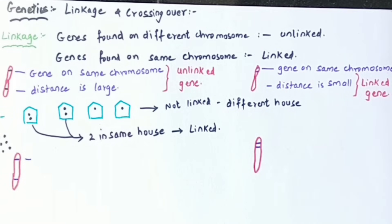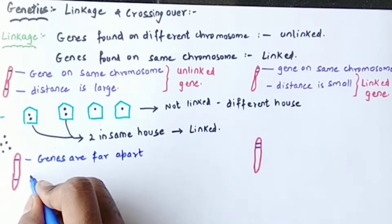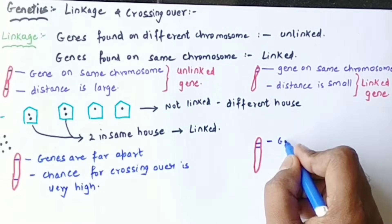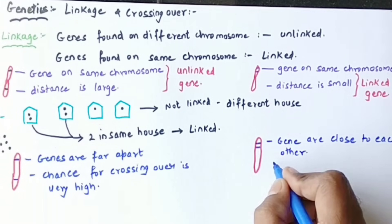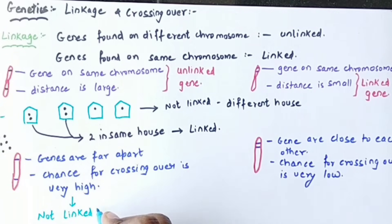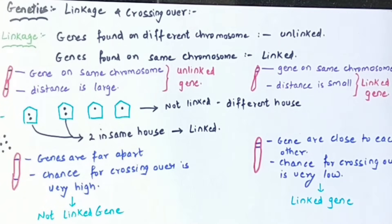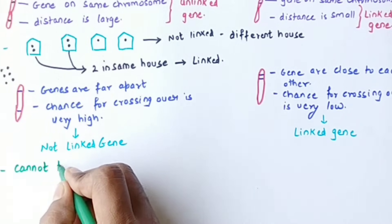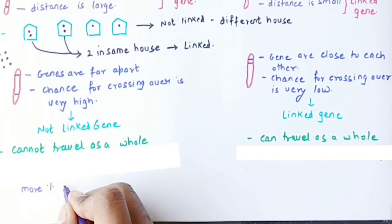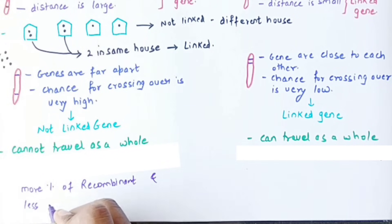In the diagram, two genes are drawn on a chromosome. Gene A and gene B are very far from each other, so the chance for crossing over is very high — these are not called linked genes. On another chromosome where the genes are very close to each other, the chance for crossing over is very low, so those are linked genes. Genes which cannot travel as a whole to the next generation are called non-linked or incompletely linked genes, and those which can travel as a whole are called linked genes.